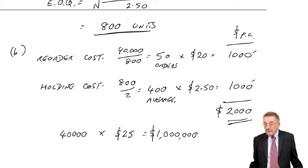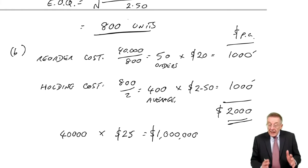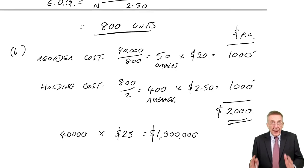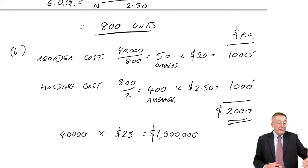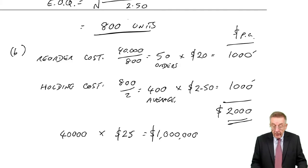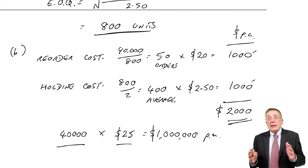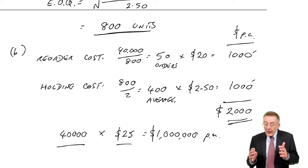We ignored the actual cost of buying the goods over the year, because however many we ordered each time, we were still buying 40,000 over the year at $25 a unit. So we'd be paying a million per year, whatever happened. So the economic order quantity was the order quantity that minimized the inventory costs.